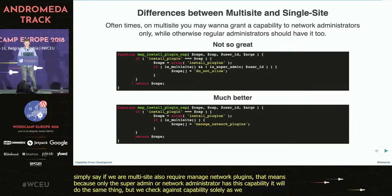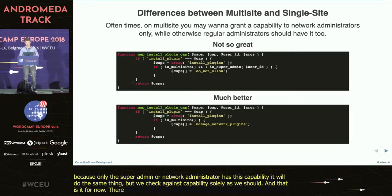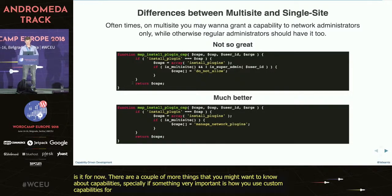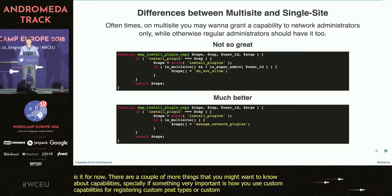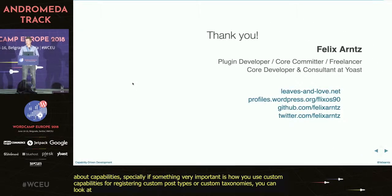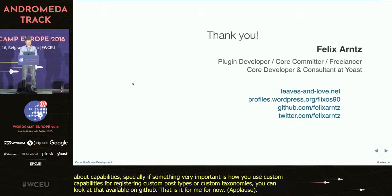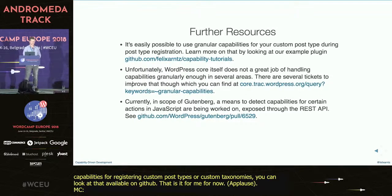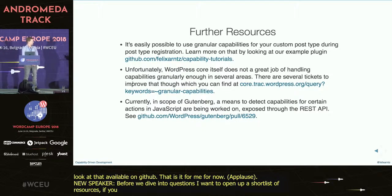And that's it for now. There are a couple more things you might want to know about capabilities, especially something very important: how you use custom capabilities for registering custom post types or custom taxonomies. This was a little beyond the scope of this session, but it's also part of this plugin, so if you're interested you can look at the plugin's code base — it's available on GitHub. And that's it for me.